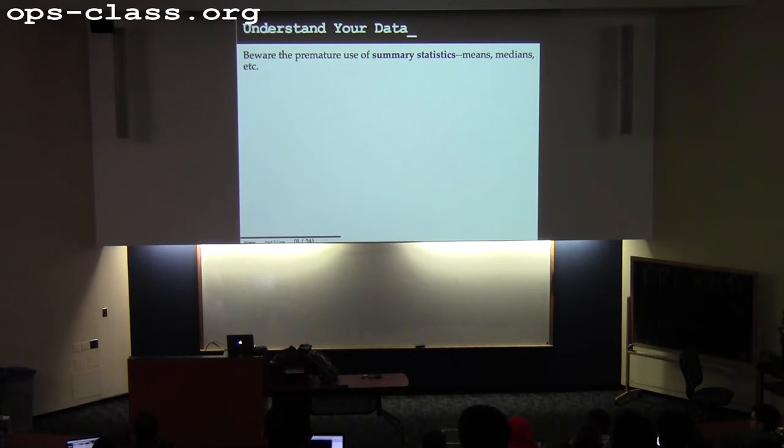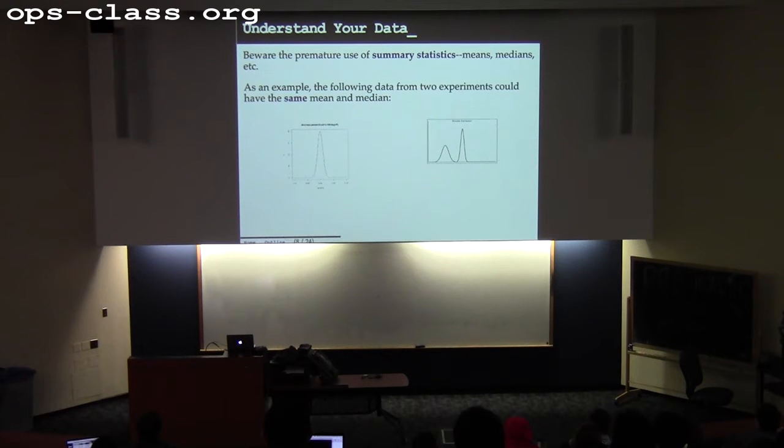So beware the premature use of summary statistics. A lot of us want to, it's a lot easier once I've done 10 experiments to just compute an average and move on. Producing things that look like distributions or histograms frequently require a little bit more work on a plotting level and also potentially more data. But it's really, really deceptive to converge too quickly to any of these so-called summary statistics that try to summarize an entire data set, particularly before you know what the data set looks like. For example, these two data sets, if you collected them, if this was the underlying reality of the thing you were trying to measure, these two can produce the same mean and median. And, in fact, I can construct two different distributions, one that's bimodal, one that's multimodal, and one that's unimodal, that have all of the same summary statistics from standard deviations to everything else.